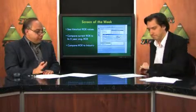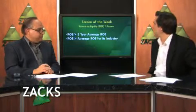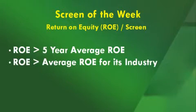ROE is a very powerful indicator with many different ways to use it — one of the most useful things in your screening, especially in today's market environment. The screen I'm running today is relatively simple. I'm looking for companies with a Zacks Rank of 1. The key components are: ROE greater than its five-year average ROE, and ROE greater than the average for its industry. A lot of really interesting picks have popped up.